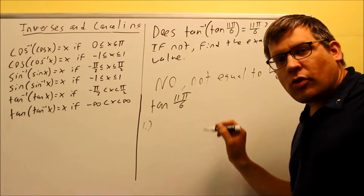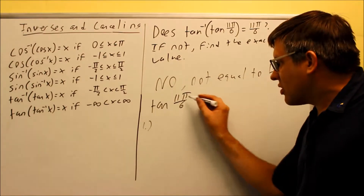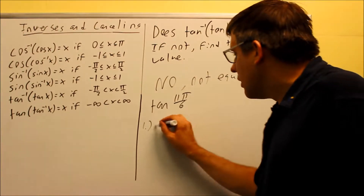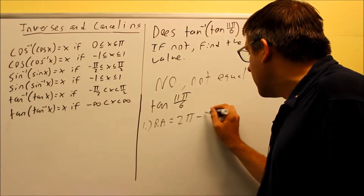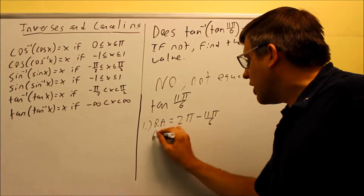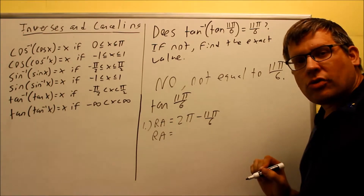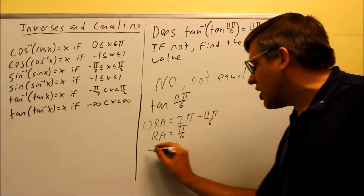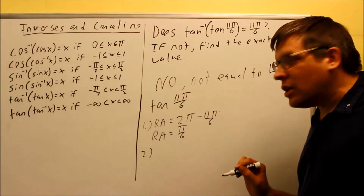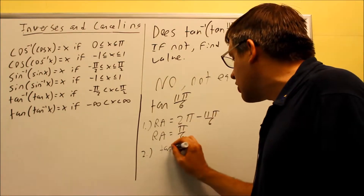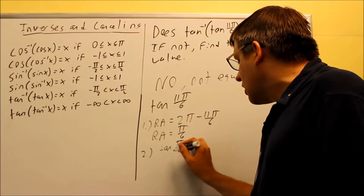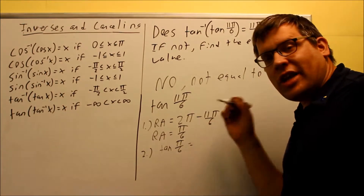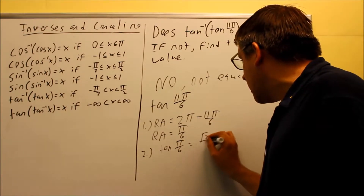11π/6, if you were to graph it, ends up in the fourth quadrant — it's slightly less than 2π. Fourth quadrant means the reference angle equals 2π minus 11π/6. Subtracting those with common denominators gives π/6, so π/6 is the reference angle — that's step 1. Step 2 is to apply the trig function to the reference angle: tangent of π/6. From the table, tan(30°) or tan(π/6) equals √3/3.